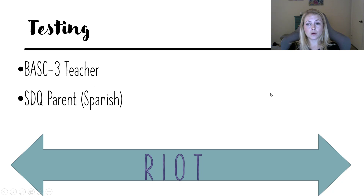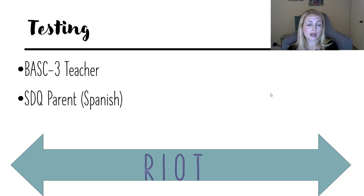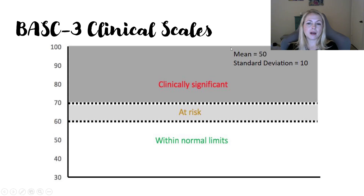For testing, we did a BASC-3 with the teacher. The parent, being Spanish-speaking, couldn't use the Spanish BASC, so we used the SDQ — the Strengths and Difficulties Questionnaire — which has a Spanish version. Our Spanish-speaking team member went through it with the parent. T-scores have a mean of 50 and a standard deviation of 10. Sixty to 70 is usually at-risk, and within normal limits is anything below that. Looking at his BASC scores from the teacher — look at all the red. This is clinically significant levels of externalizing, hyperactivity, and aggression.